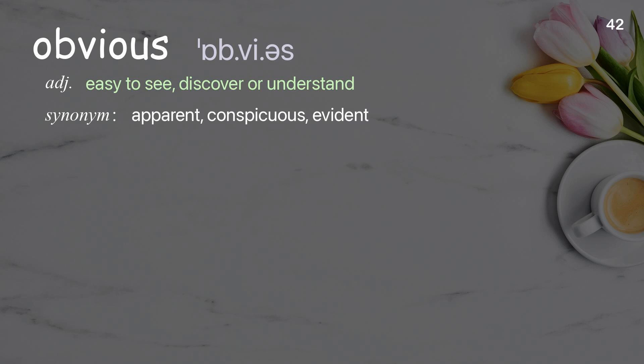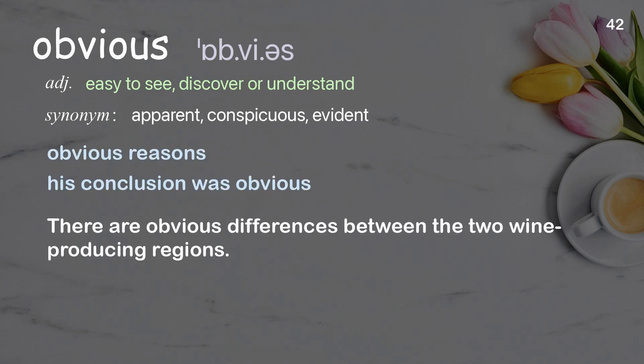Obvious: easy to see, discover, or understand. Examples: obvious reasons; his conclusion was obvious. There are obvious differences between the two wine-producing regions.